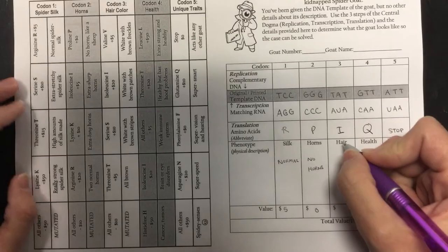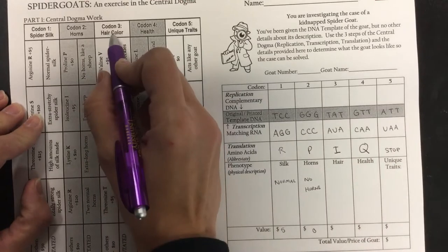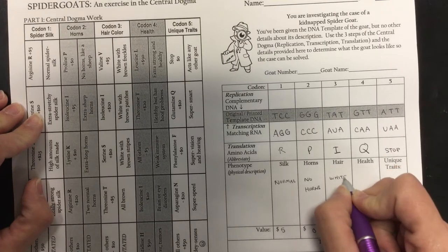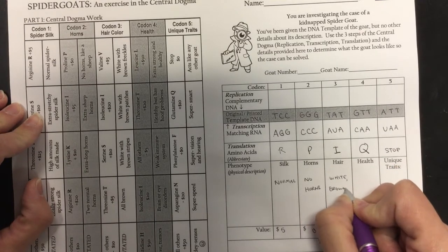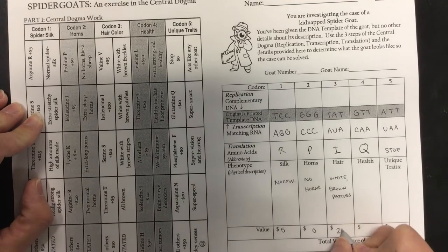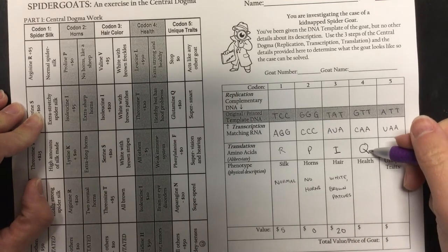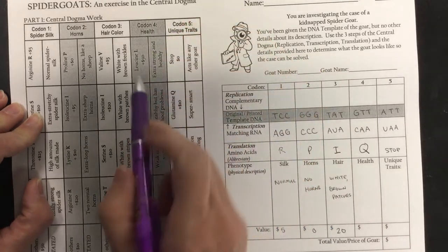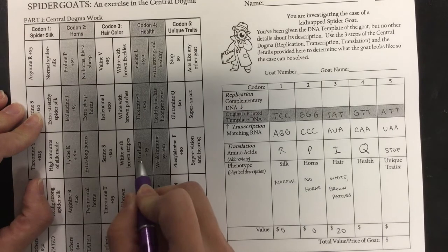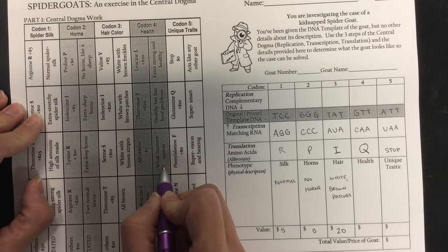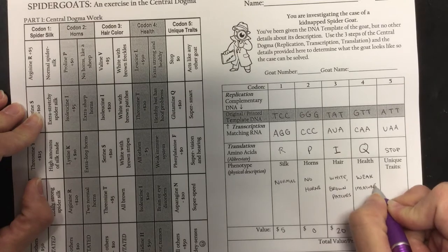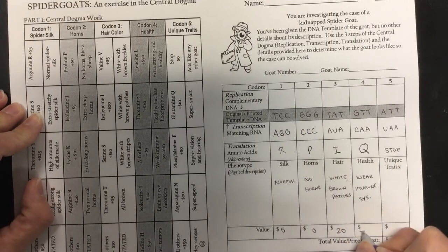Next one is hair over here, and I made isoleucine. So go to codon 3 — isoleucine makes white with brown patches like a cow, and that gives me $20. The next one is Q, so I go to codon 4, look for Q. L, T, I, H — it's not one of those, so it must be one of these others. It says all others create a mutation that gives us a weak immune system, so I write in weak immune system.